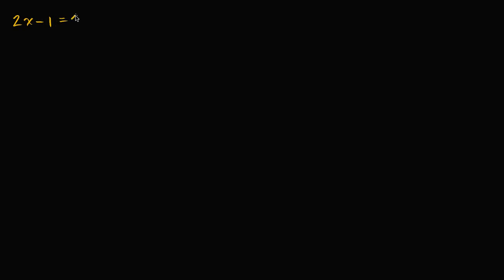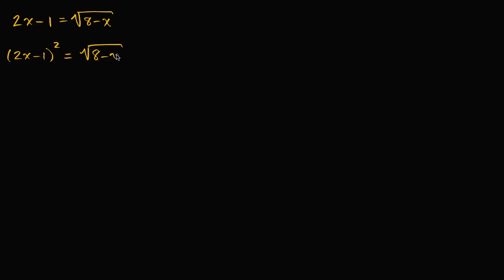Let's say we have the radical equation 2x minus one is equal to the square root of eight minus x. We already have the radical isolated on one side of the equation, so let's just get rid of the radical and square both sides. This gives us 2x minus one squared is equal to the square root of eight minus x, squared.